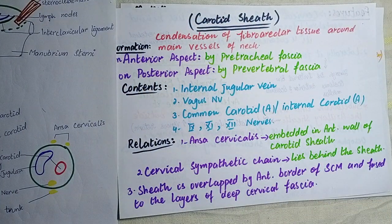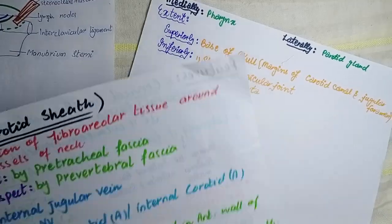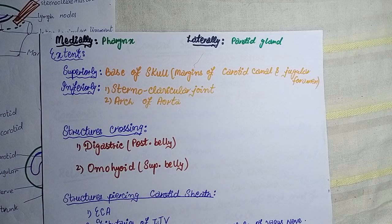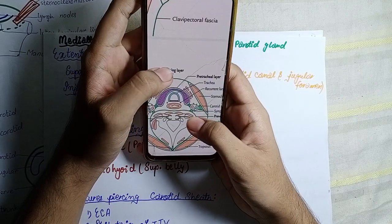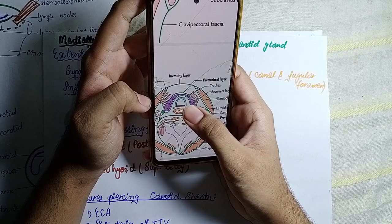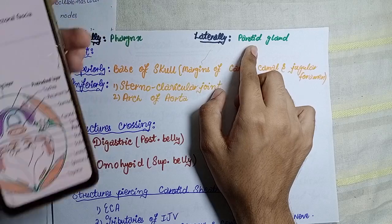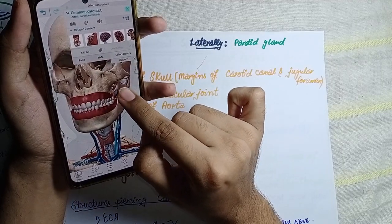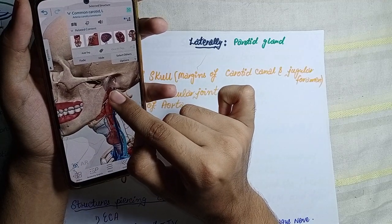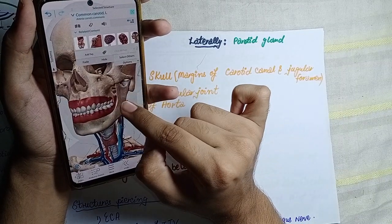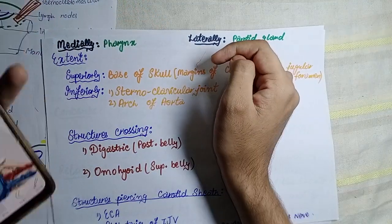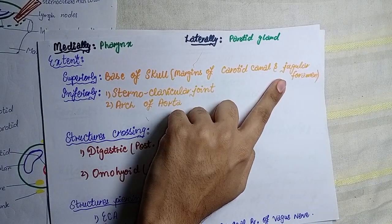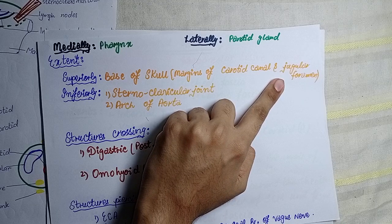The cervical sympathetic chain is the posterior relation. Medially, the pharynx and trachea are present as medial relations. Laterally, we can see the parotid gland as a lateral relation. The internal carotid artery and internal jugular vein are visible, and the parotid gland is located laterally in relation to the carotid sheath.